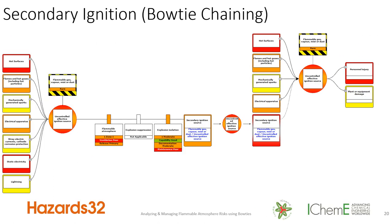One of the benefits of the bowtie approach is that you can chain bowties together. The consequence from one bowtie becomes a threat on another bowtie — ignition in one location becomes a potential ignition source for a secondary location, so this consequence becomes the threat on an upstream or downstream piece of equipment.